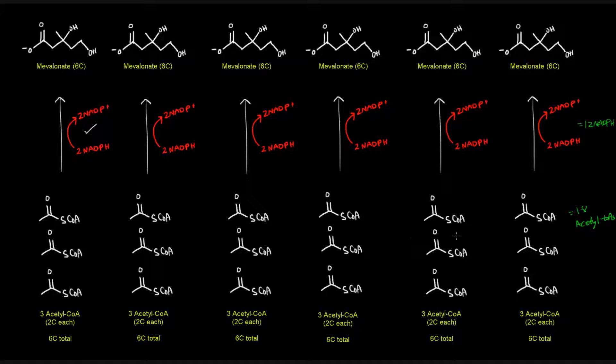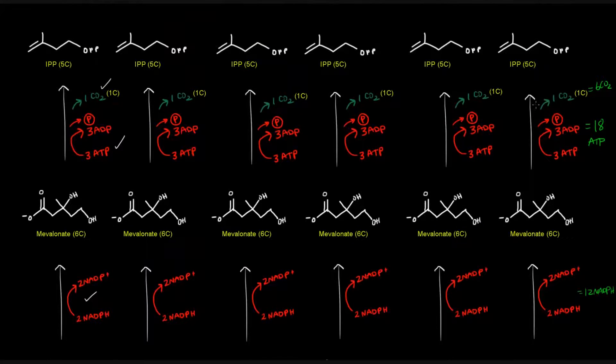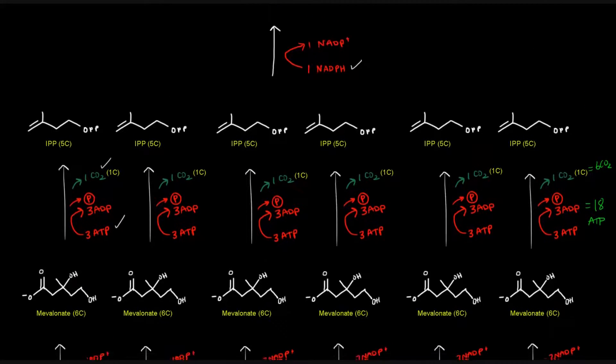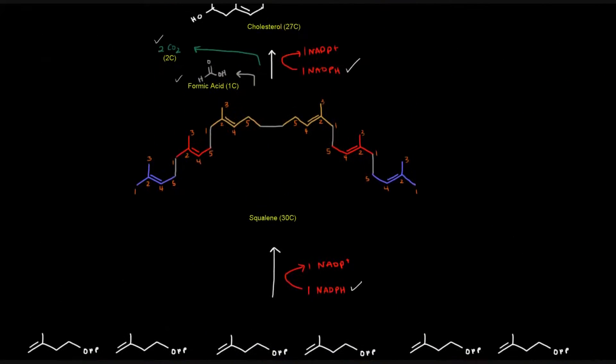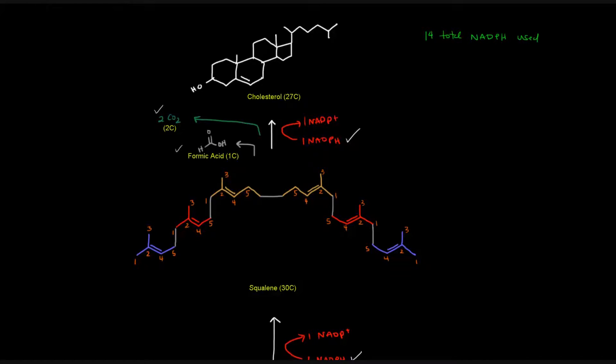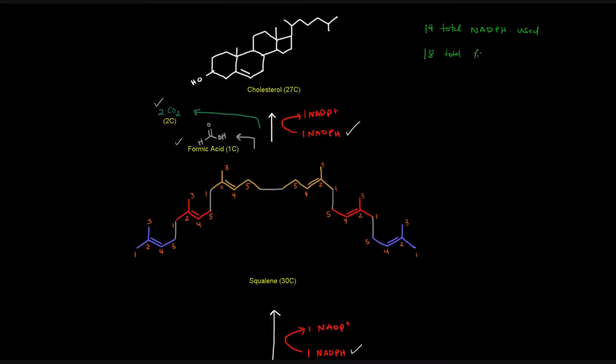So we have 18 acetyl-CoAs. We get six mevalonates out of those by using 12 NADPHs. Those six mevalonates are each converted to IPP, losing one carbon dioxide each time and using ATP, 18 ATP molecules to get there. And then we use another NADPH here. So if we start counting these 12, that would be 13 right there to make the squalene and 14 there to make the cholesterol. So we use 14 total NADPHs used and 18 total ATP molecules used.